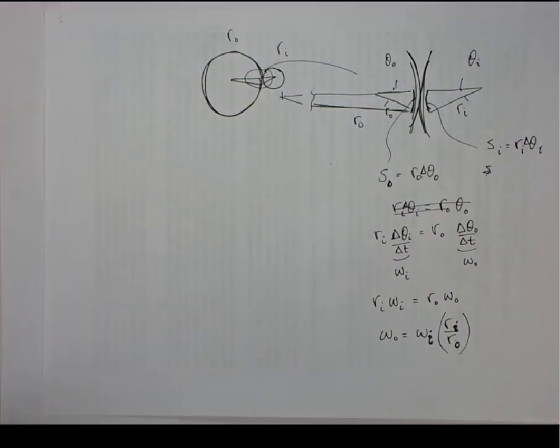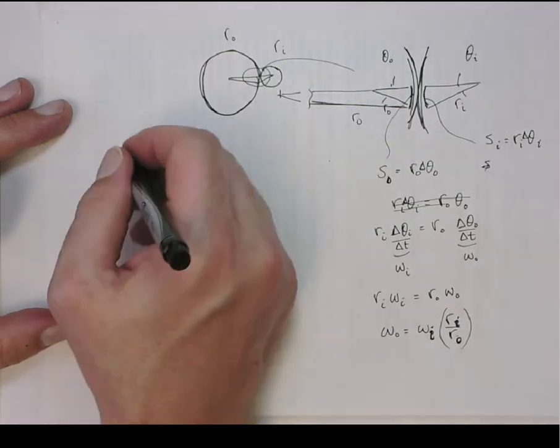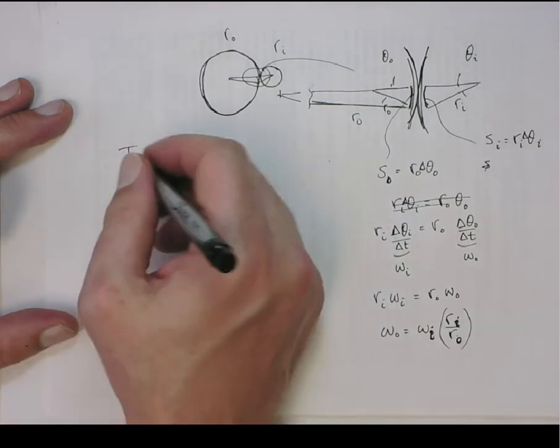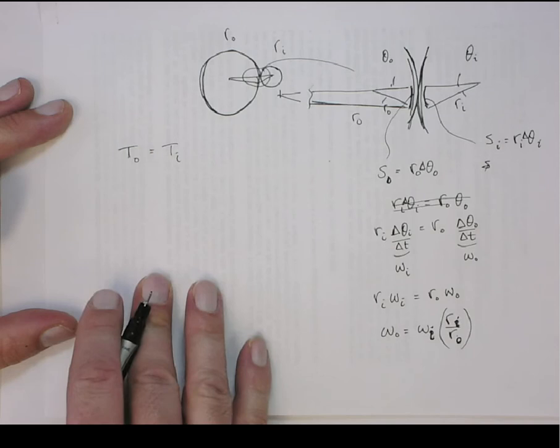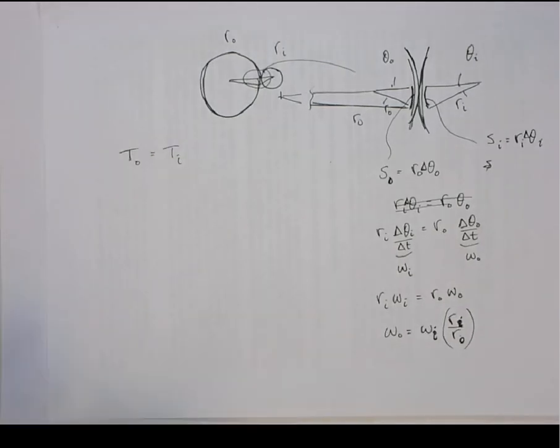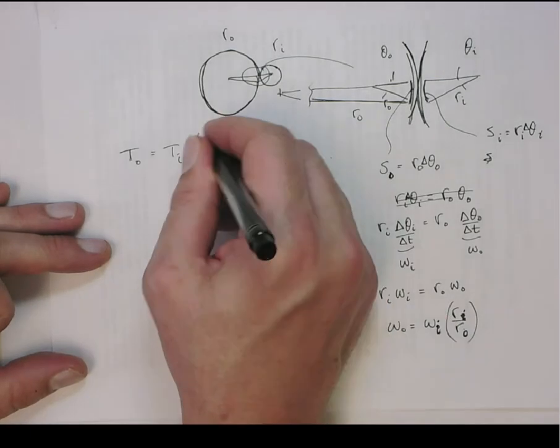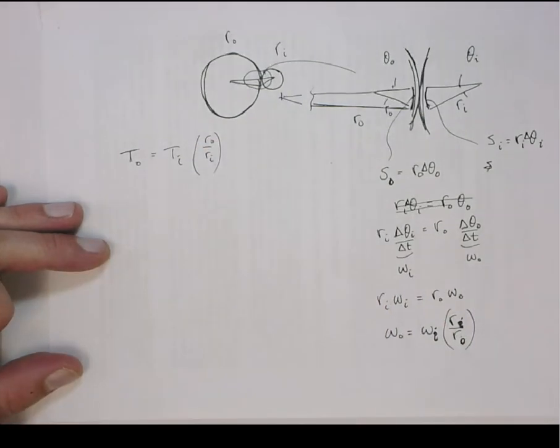Obviously since the power is conserved, when the speed goes down, the torque has to go up. So that means the speed and the torque have an inverse relationship. The speed goes up, the torque goes down. The speed goes down, the torque goes up. So these guys are related as follows.